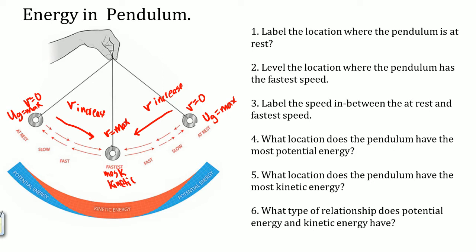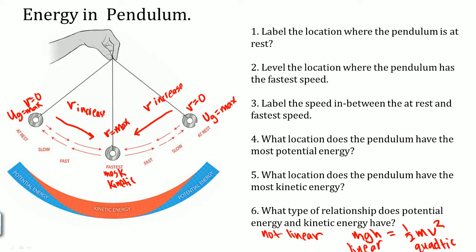The diagram shows the relationship between potential and kinetic energy. As it starts swinging towards the center, all the potential energy gets converted into kinetic. This relationship is not linear because you're converting mgh equal to one-half mv squared — you are comparing something linear to something quadratic in nature. Degree one versus degree two, so they're not a one-to-one relationship. This should give you an idea of the energy in a pendulum.